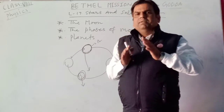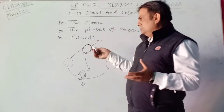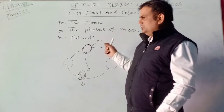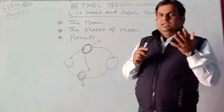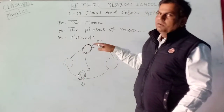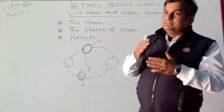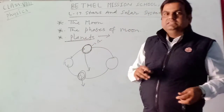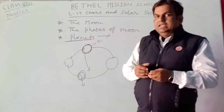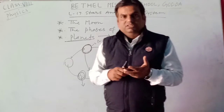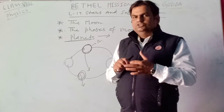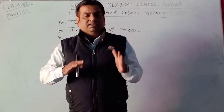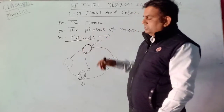All planets have their own satellites, and the moon is the natural satellite of the earth. However, Mercury and Venus are two planets that have no moon. There are eight planets in our solar system: Mercury, Venus, Earth, Mars, Jupiter, Saturn, Uranus, and Neptune.